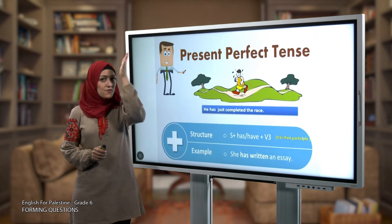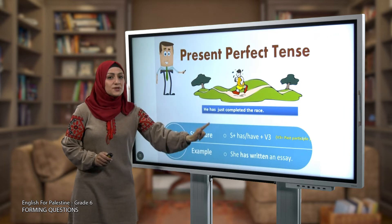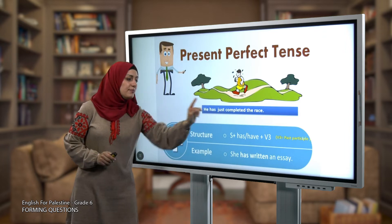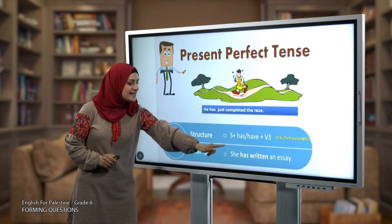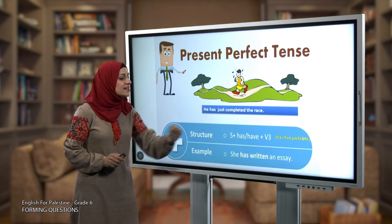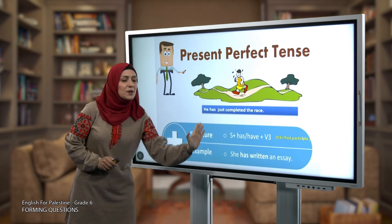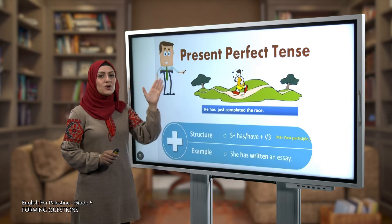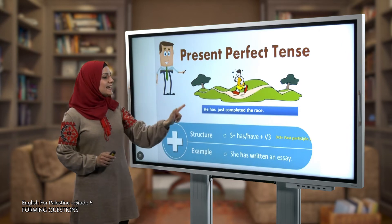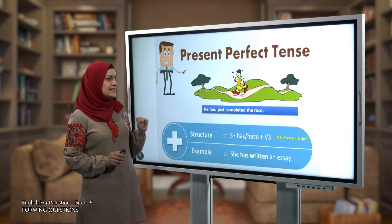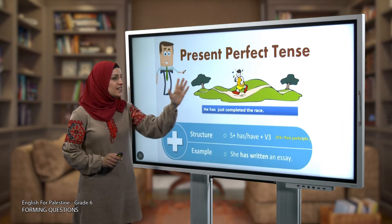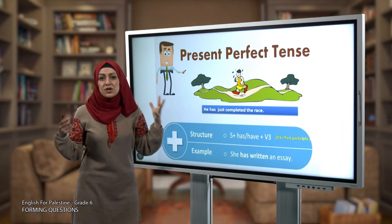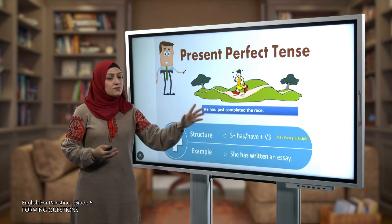We use verb three with the present perfect. For example: 'She has written an essay.' 'She' is the subject, 'has' is used because it's a singular subject, and 'written' is verb three. Another example: 'He has just completed the race.' Notice how he is about to reach the end of the race and is tired — the effect of the race is still on that person.